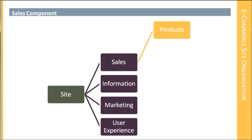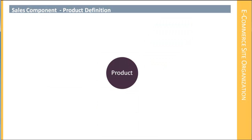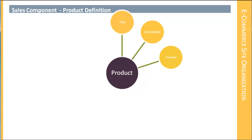The product is defined by a variety of different elements. The first element, of course, is the product name or its title. Then you have the product description — this is the large, expansive description of the product. Then you have the excerpt, which is the short summary description of the product.